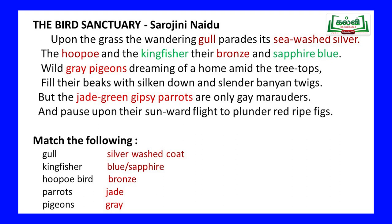Next is the kingfisher. 'The hoopoe and the kingfisher, their bronze and sapphire blue' — hoopoe gets bronze, kingfisher gets sapphire blue. Then parrots — 'the jade green gypsy parrots' — the colour is jade green. And pigeons — 'wild grey pigeons' — the colour is grey. If I observe the poem carefully, I will find the clues to my answers; I have associated the colours with the birds by getting clues directly from the poem.